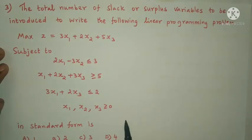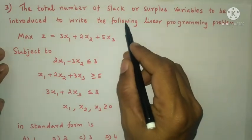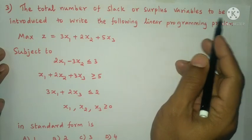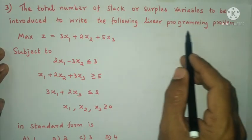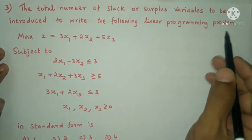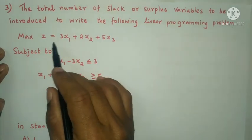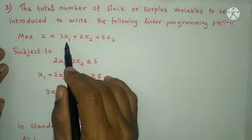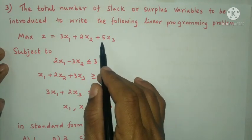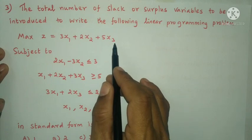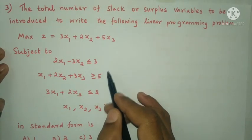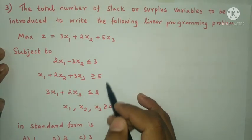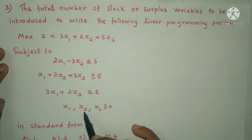Next question: Find the total number of slack or surplus variables to be introduced to write the following linear programming problem in standard form. Maximize z equal to 3x1 plus 2x2 plus 5x3, subject to the constraints, where x1, x2, x3 are greater than or equal to 0.